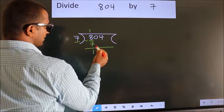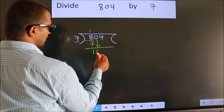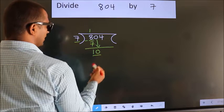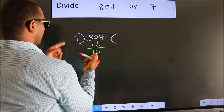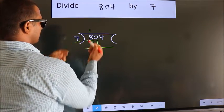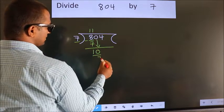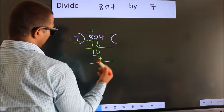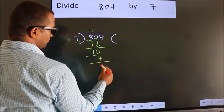After this, bring down the beside number. So 0 down. So 10. A number close to 10 in 7 table is 7 once 7. Now we subtract. We get 3.